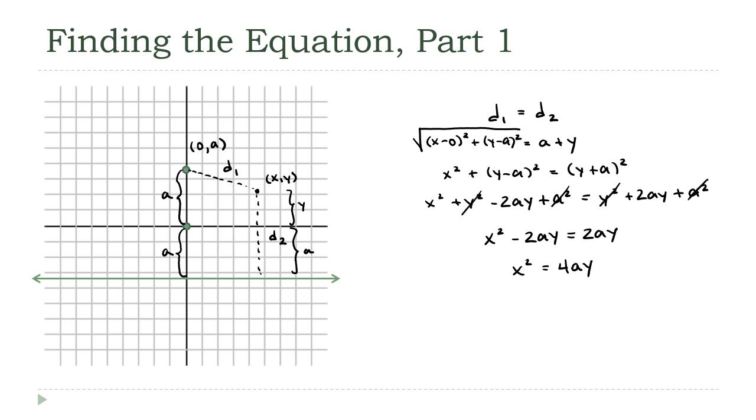Okay, well, how about if I had put the directrix above the focus? Suppose I had just hypothetically switched those two parts. I'm going to leave going through the calculations again as an exercise. If you do that, you're going to come out with almost exactly the same thing. Instead of x squared equals 4ay, you're going to get x squared equals minus 4ay.